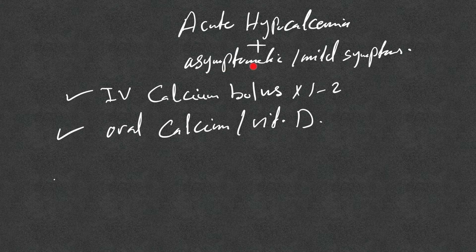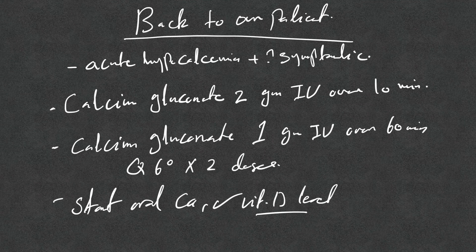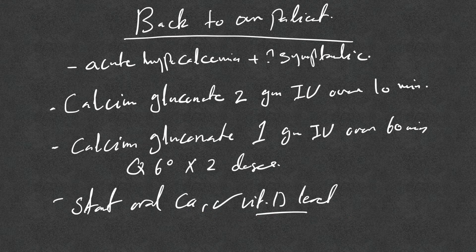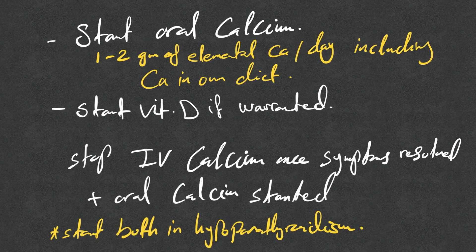For acute hypocalcemia with no symptoms or mild symptoms, give one or two IV calcium boluses and start oral calcium and vitamin D. For our patient, I will give calcium gluconate 2 grams IV over 10 minutes, then 1 gram IV over 60 minutes every six hours times two doses if no calcium drip is available, then start oral calcium and vitamin D.